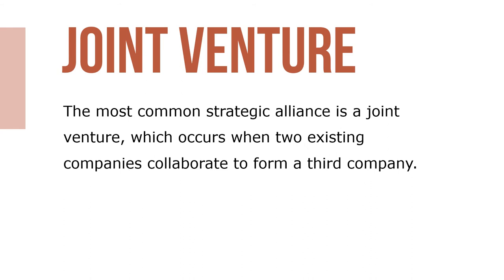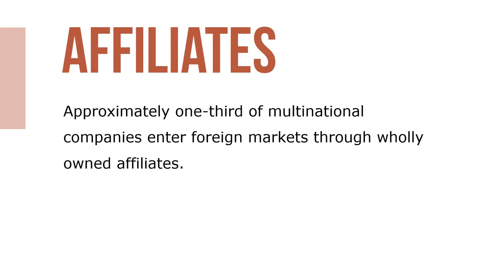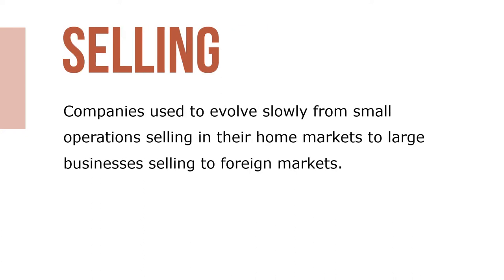The most common strategic alliance is a joint venture, which occurs when two existing companies collaborate to form a third company. The two founding companies remain intact and unchanged, except that together they now own a newly created joint venture. Approximately one-third of multinational companies enter foreign markets through wholly owned affiliates. Companies used to evolve slowly from small domestic operations to large global businesses, typically following a phased model of globalization.